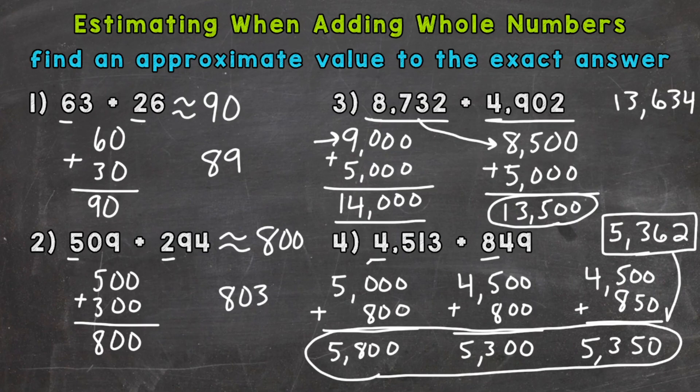So this last estimate was the closest. And that's because our rounded numbers there for our estimate are the closest to the original problem. So again, the closer you round to the original problem, the better the estimate.